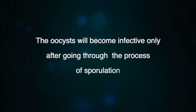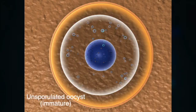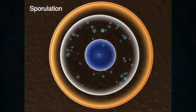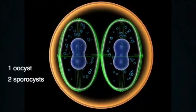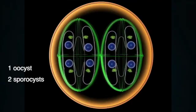The oocysts will become infective only after going through the process of sporulation. Sporulation is a series of divisions in which the number of chromosomes is reduced in half. The first division of the oocyst gives rise to two sporocysts. Each is limited by a sporocyst wall, here shown in green.